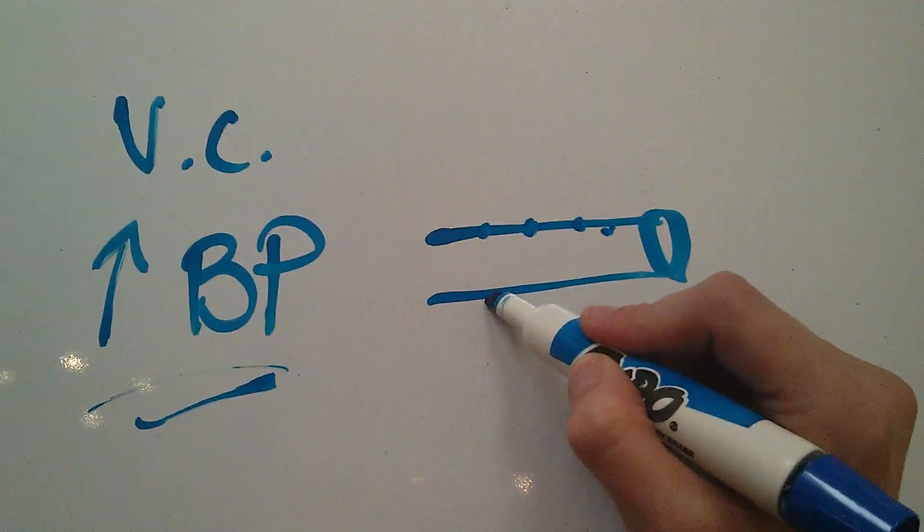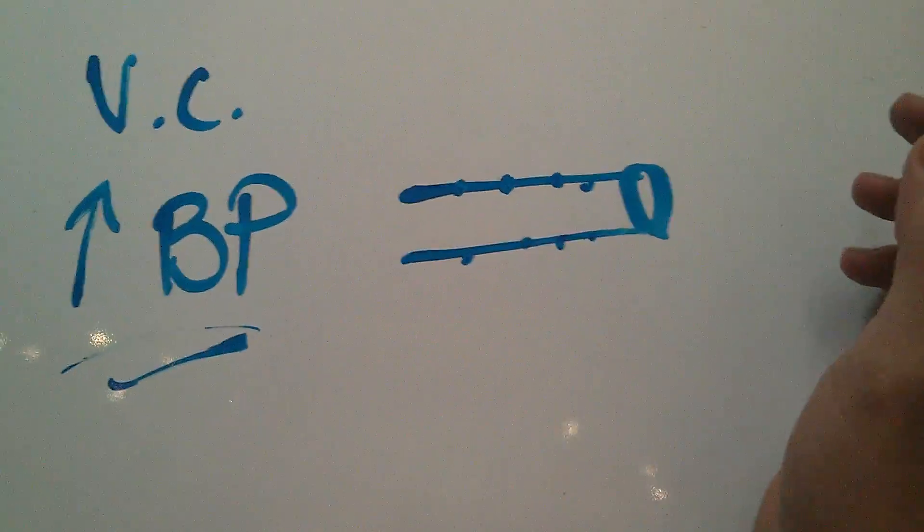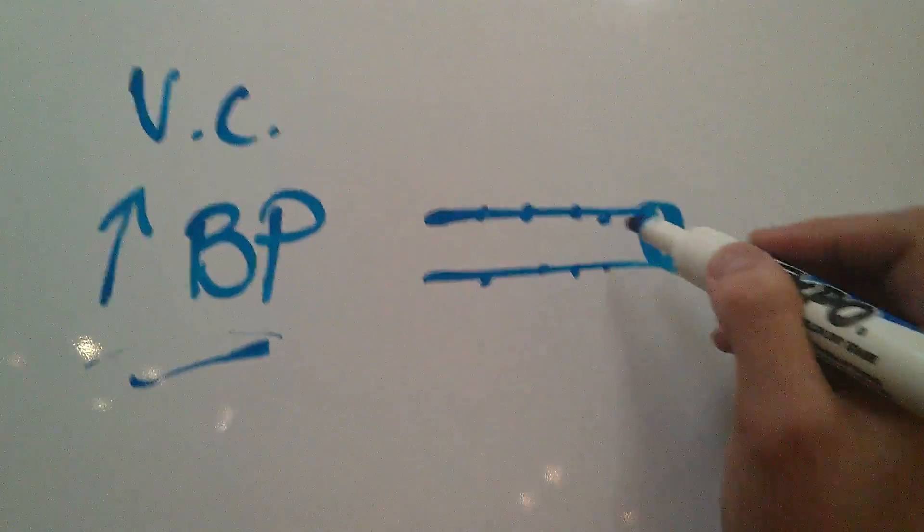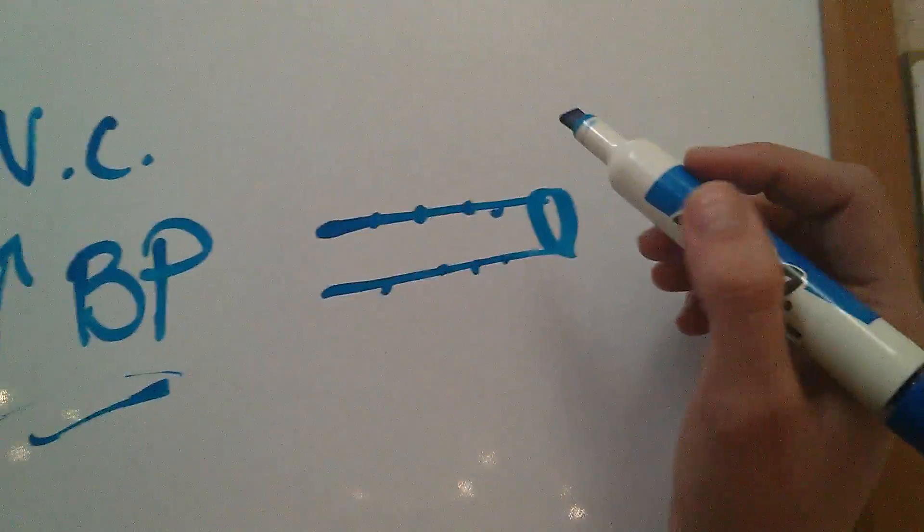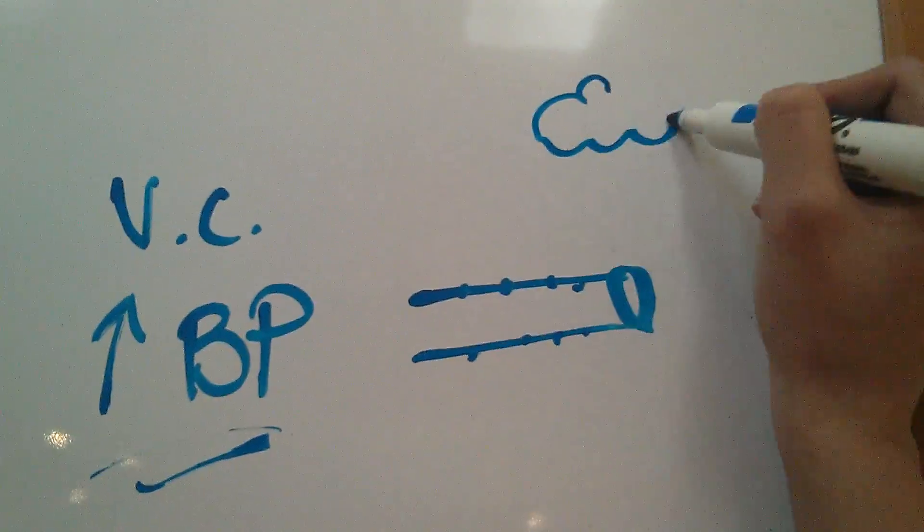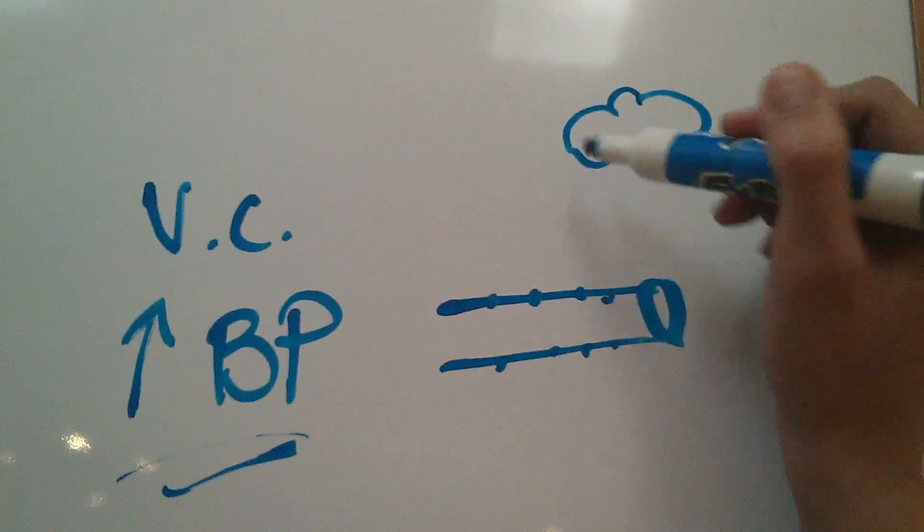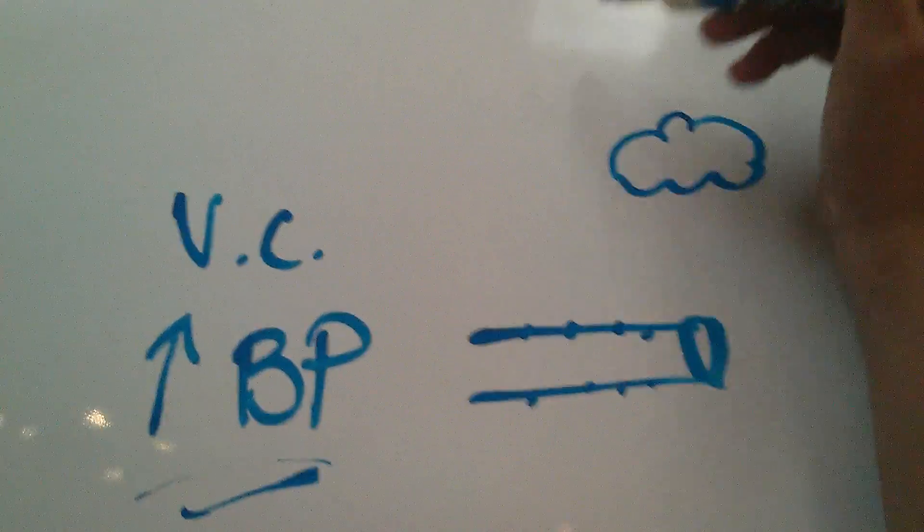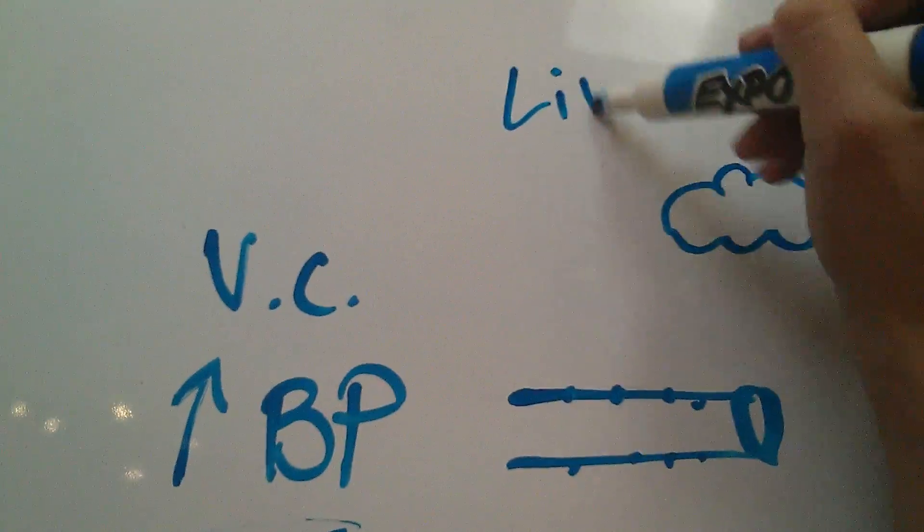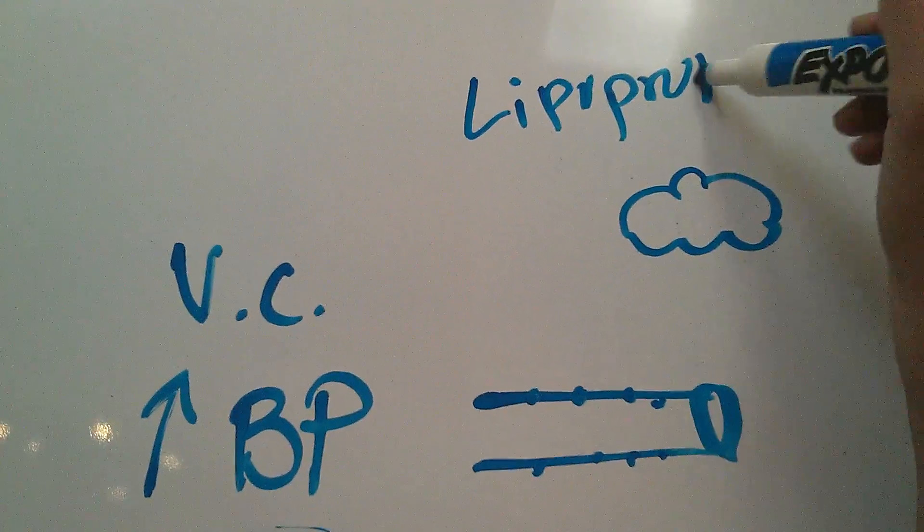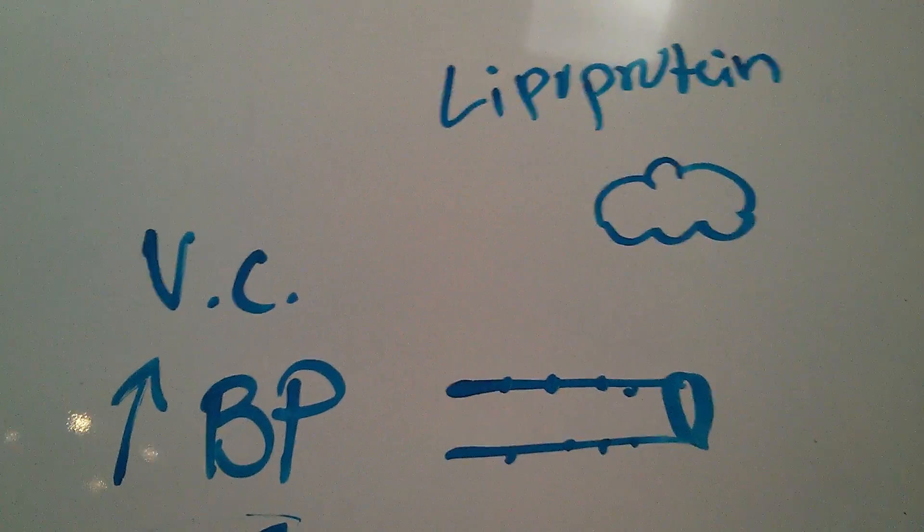In response to those holes that are forming in those vessels, your brain is going to start stimulating the production of a lipoprotein called fibronectin.